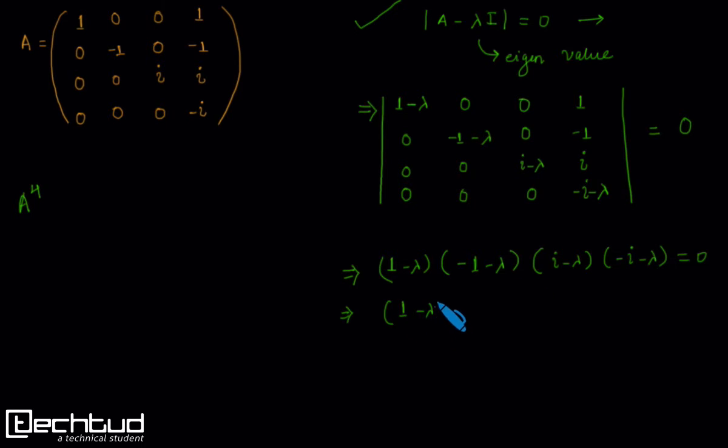1 minus lambda, 1 minus lambda, i minus lambda and i plus lambda. The minus taken from this term and this term will get multiplied and result in positive 1.